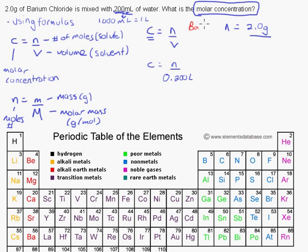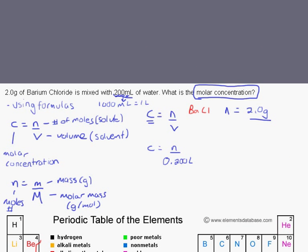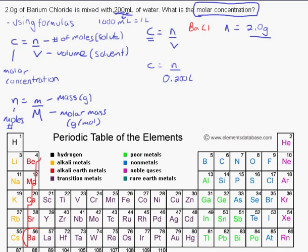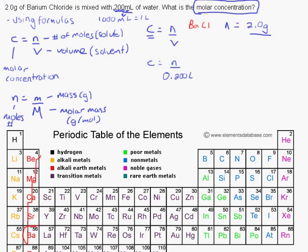So we have barium, and we have chlorine. And so if I look here, barium is located right here on my periodic table. And so barium is located right here on my periodic table, and chlorine is located over here.